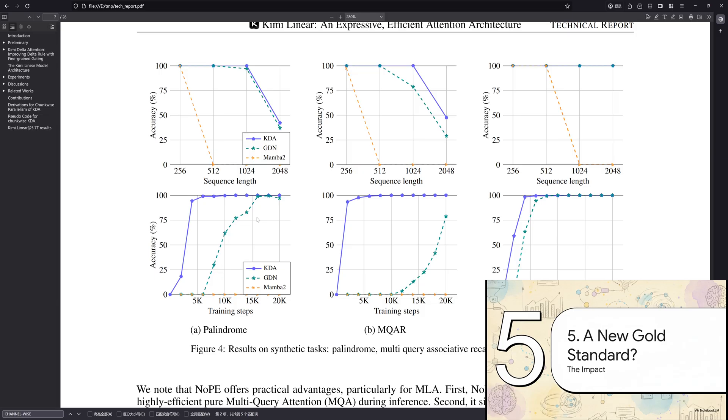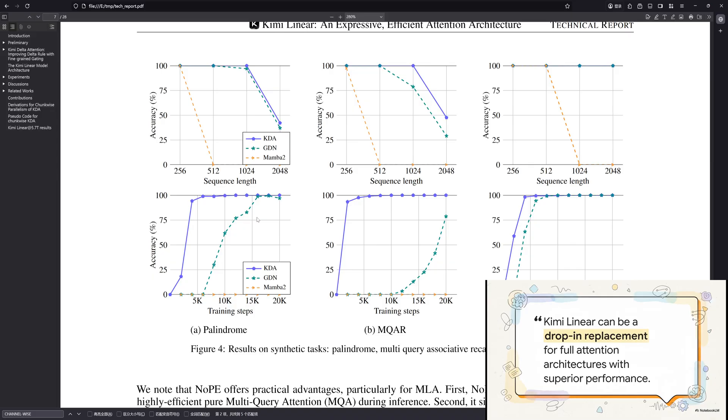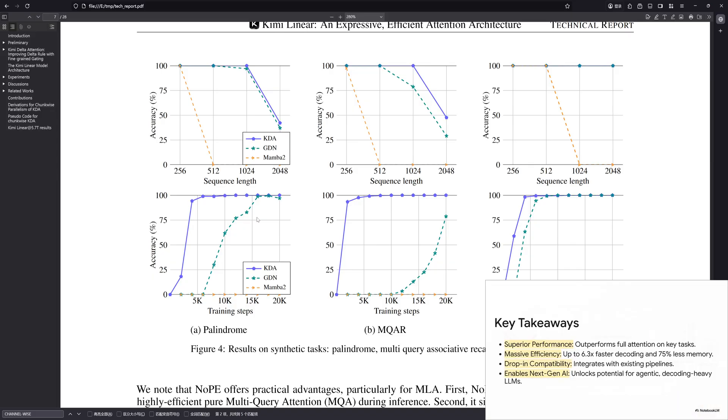So you've got superior performance and these massive efficiency gains. You have to step back and ask, could this be the new gold standard? And you know, the authors themselves aren't shy about it. They make this bold claim right in their papers abstract. They say chemilinear is designed to be a drop-in replacement for what we have now. That's a huge deal. It means you don't have to tear everything down and start over to get these benefits. So let's just quickly wrap up the key takeaways. One, you get better performance on the hard stuff. Two, you get incredible gains in speed and memory. Three, it's designed to be compatible with existing systems. And four, maybe most excitingly, this really feels like it unlocks the door for a new generation of AI that can process and remember just enormous amounts of information.